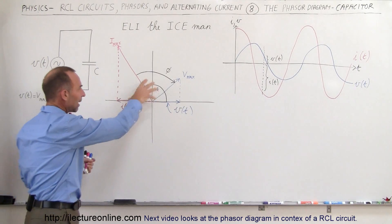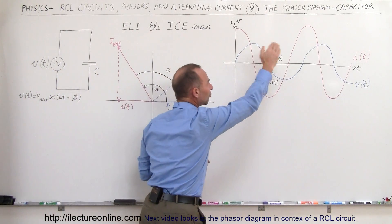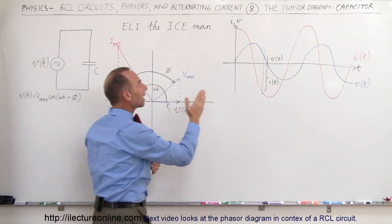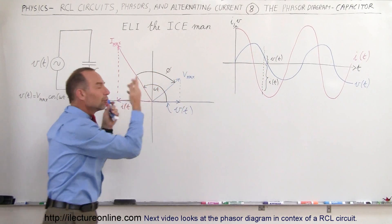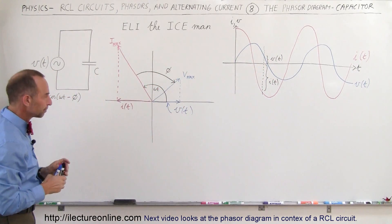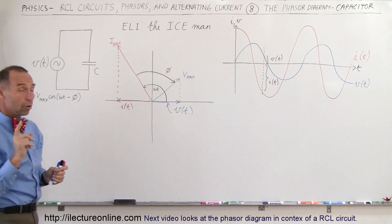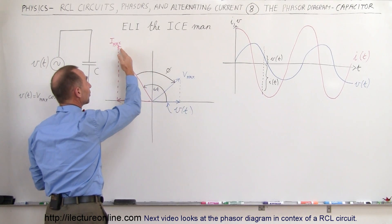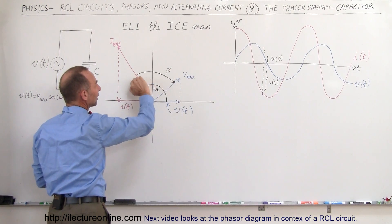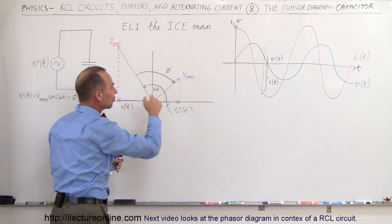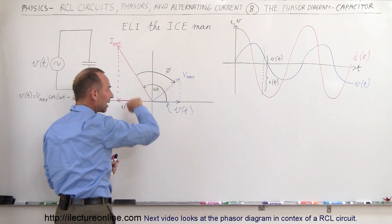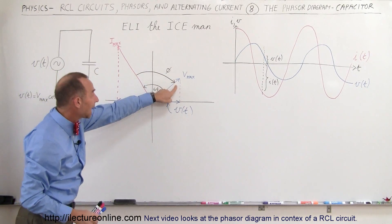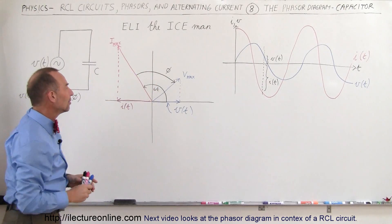A phase diagram is really a snapshot representation — at any moment in time, it shows exactly what the voltage and current will be relative to the phase of the oscillations. Also keep in mind that the phase angle is the angle relative to the position of the current where the voltage is right now. The phase angle is drawn in the opposite direction of the motion of the phasor, making it a negative phase angle, which means the voltage lags the current by 90 degrees.